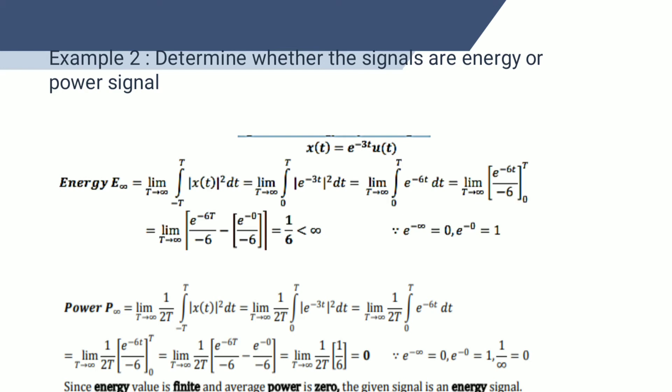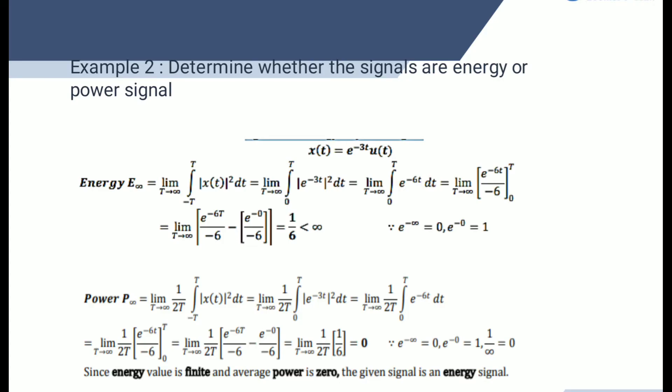For x(t) = e^(-3t)·u(t), calculating E∞ = limit as T→∞ of the integral from 0 to ∞ of e^(-6t) dt. Evaluating with upper and lower limits gives 1/6, which is less than infinity. This uses the facts that e^(-∞) = 0 and e^0 = 1.